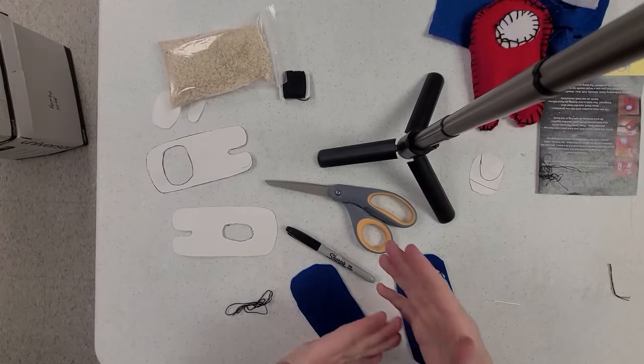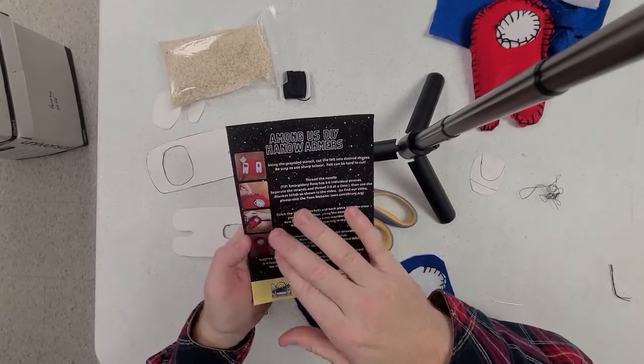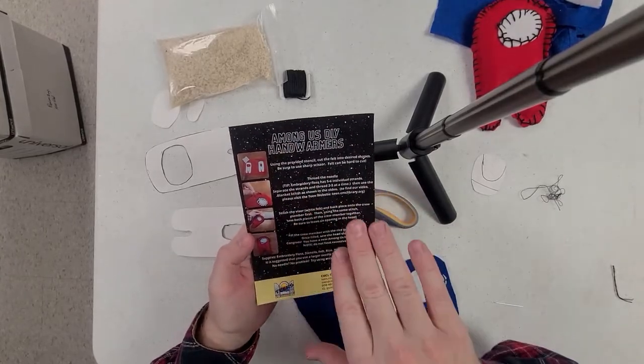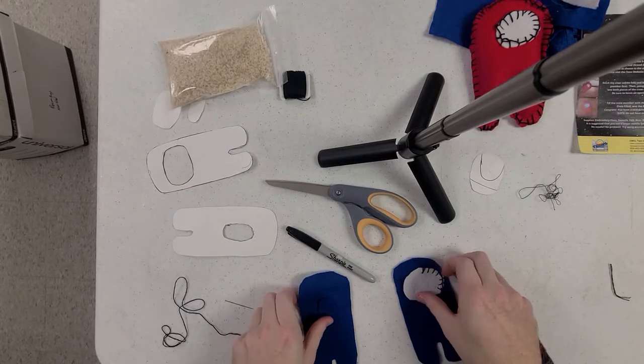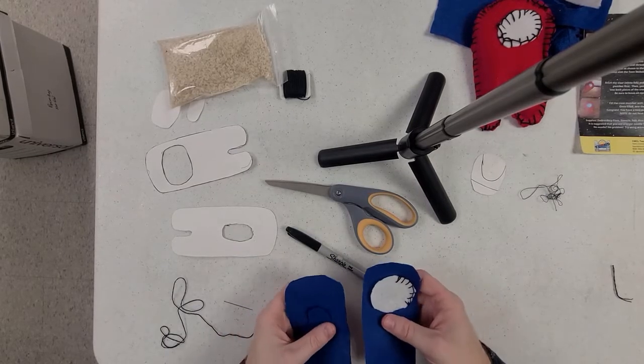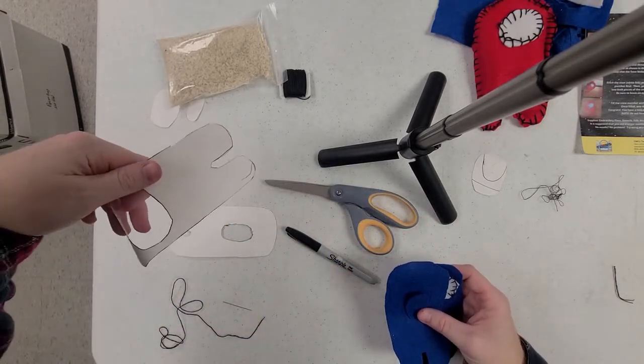So now that you've got the contents of your bag laid out, you're going to want to first look at the instructions and follow the pictures on here. Make sure you're doing everything the way that it's laid out on here to do. So the first thing you're going to want to do is once you have everything out, you're going to want to cut out your pieces of felt using your stencils.